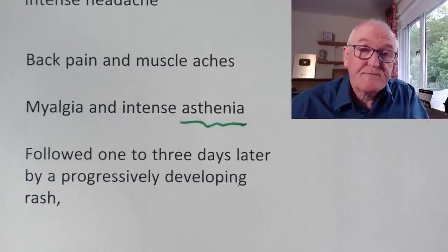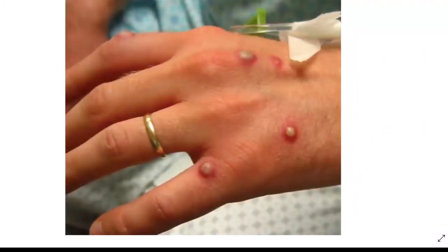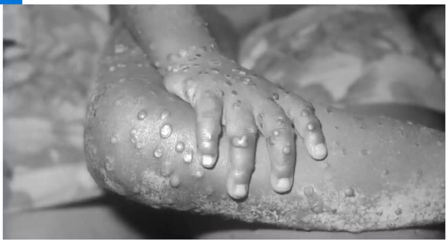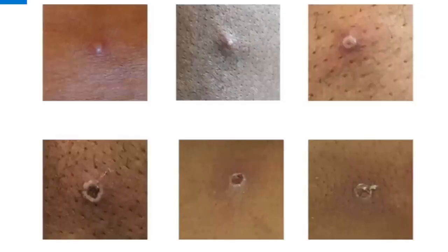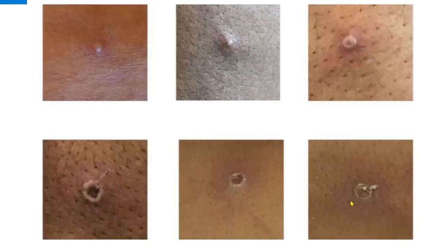Here we see an example of the pustular spots caused by monkeypox — they can occur on any part of the body. This picture shows the progression of a single spot: it starts as a raised area, becomes more prominent, then fills with pus. After a while it bursts, dries out, and gradually flakes off, leaving a scab and possibly a scar. The rash can also be very itchy and sometimes painful.